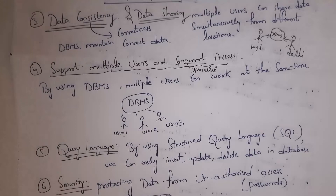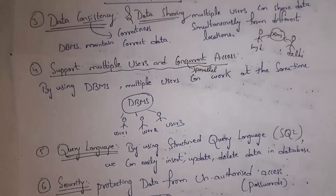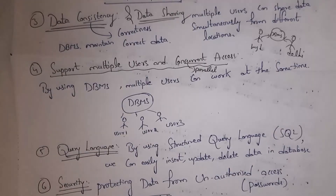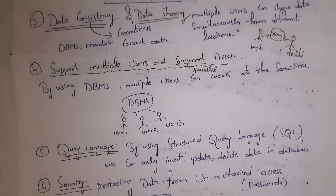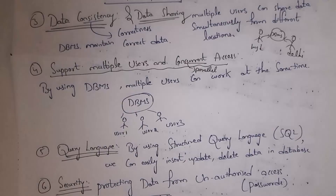The next feature is query language. Normally two people can communicate in English or Telugu or other languages, but DBMS software cannot understand those languages. To communicate with DBMS software there is a separate language called SQL — Structured Query Language. Using SQL we can easily communicate with the database, and we can insert, update, and delete data.